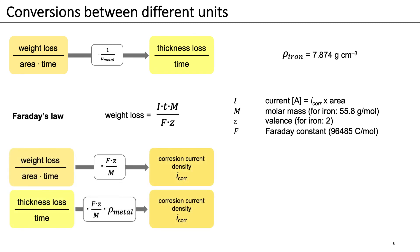In the lower part of the screen, you can see how we can use Faraday's law of electrolysis to convert from weight loss per area per time to a corrosion current density. You can also see how thickness loss per time can be converted to a corrosion current density.